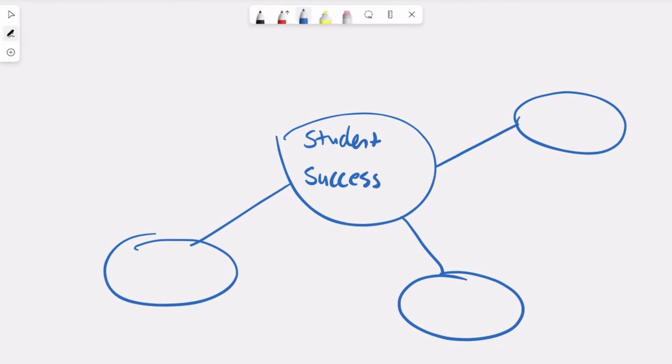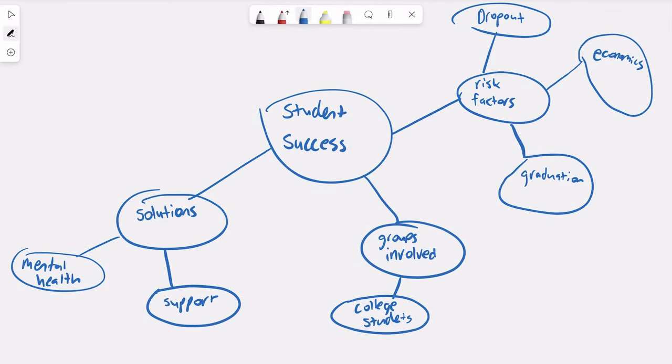Some branches we can make for our topic include risk factors, groups involved, and solutions. Continue building upon these branches to explore other areas of the topic.